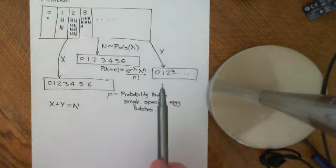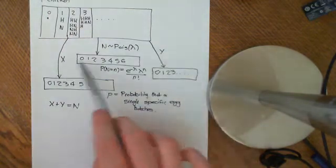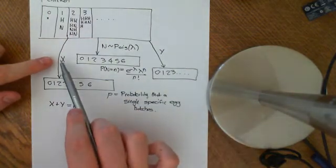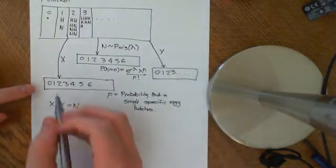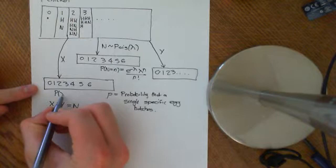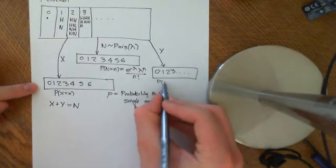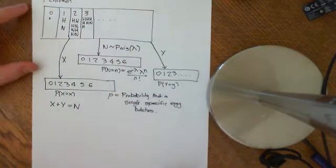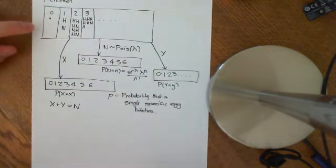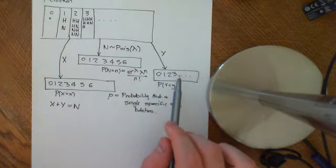Our problem is to find the probability distribution of X — we want to find the PMF for X. We want to find out the probability that big X equals little x, and the probability that big Y equals some little y. Big X is the random variable giving the number of eggs that hatched, and Y is the number of eggs that failed to hatch.